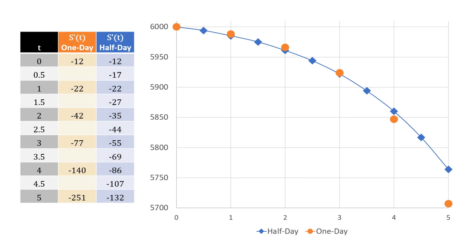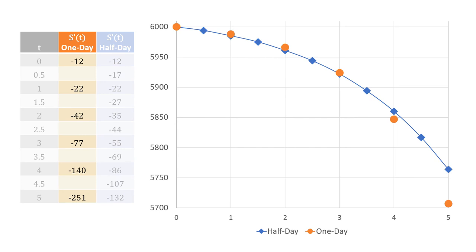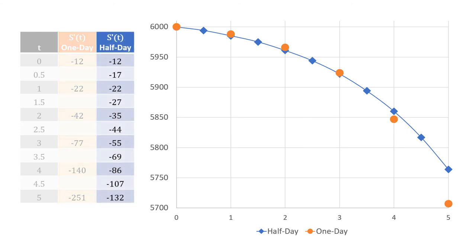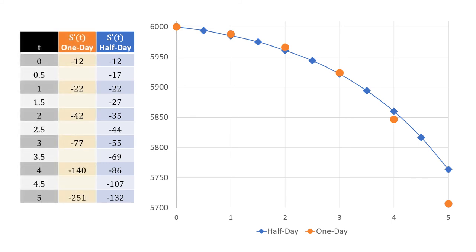Here is a table of values for s prime, the rate at which the number of susceptible individuals is changing. If we look at the values for the predictions using one day time intervals, we can see that these rates are always decreasing, and the same is true of the rates using the half day time intervals. When we're using the half day intervals, we're updating these rates more frequently, so the resulting predictions for the number of susceptible individuals is more accurate.